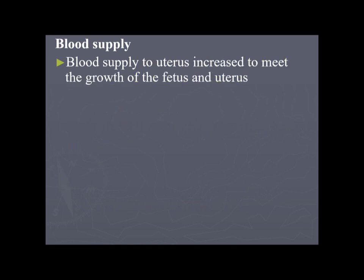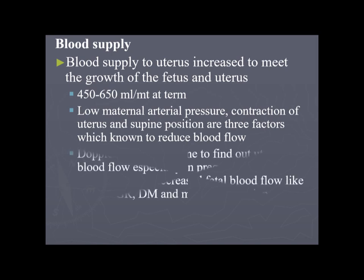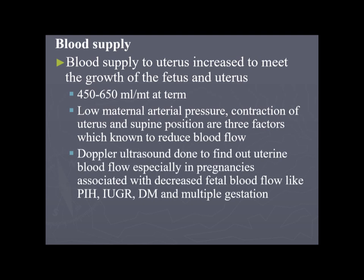Blood supply to the uterus increases to meet the needs of the growing fetus and uterus — 450 to 650 ml per minute flows to the uterus. Low maternal arterial pressure, uterine contraction, and supine position are three factors known to reduce blood flow. Doppler ultrasound is used to assess uterine blood flow in pregnancies with decreased fetal blood flow, such as PIH, IUGR, diabetes mellitus, and multiple gestation.